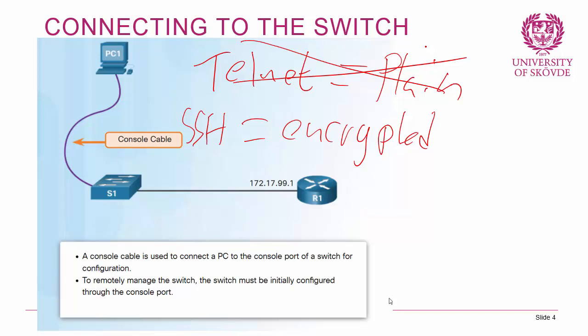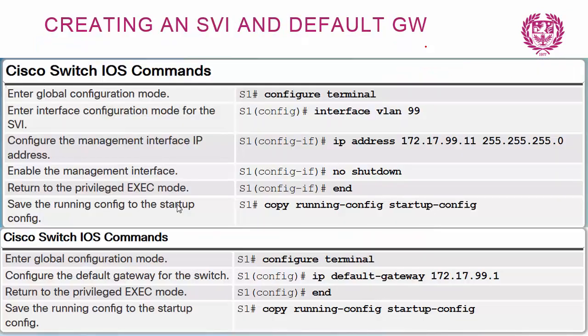To remotely access a switch we have to configure what is called an SVI or Switch Virtual Interface. We create a VLAN interface — we'll discuss VLANs more next class. We assign an IP address to a VLAN by going to configuration terminal and typing 'interface VLAN 1', which is the default VLAN for Cisco switches, then configure an IP address, do the no shutdown command, and copy running config to startup config. With this configuration we can access the switch from another device within the same network.